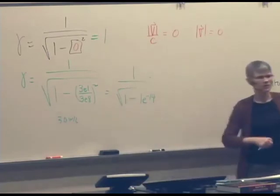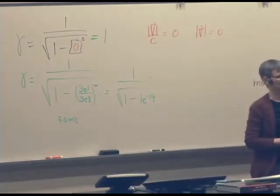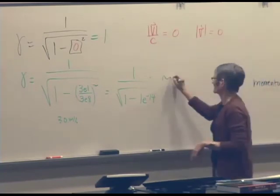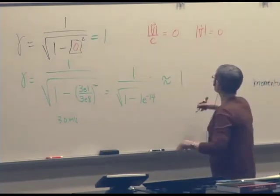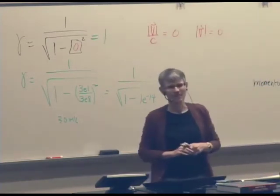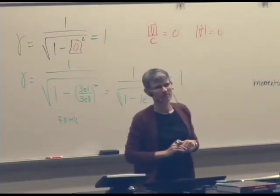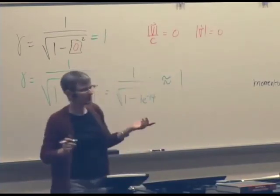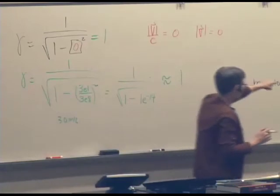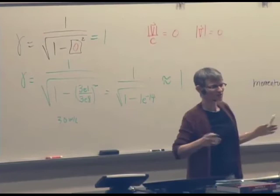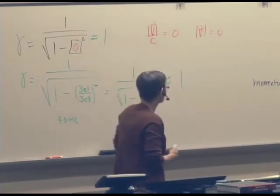What's 1 minus 10 to the minus 14th? It's 1, isn't it? So something going 30 meters per second, gamma is approximately 1. So for things moving slowly, the approximation that this quantity is 1 is just fine. And we'll see that slowly can be pretty fast.